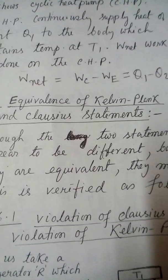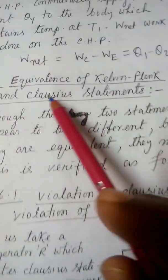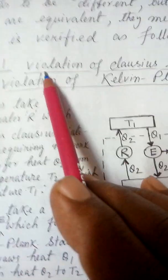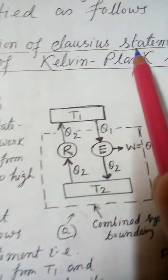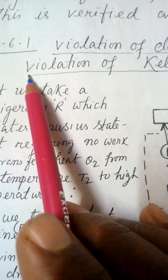Now, there is an equivalence of the two statements of the second law of thermodynamics. The equivalence of the Kelvin-Planck and Clausius statements can be proved very easily. Violation of the Clausius statement leads to violation of the Kelvin-Planck statement.